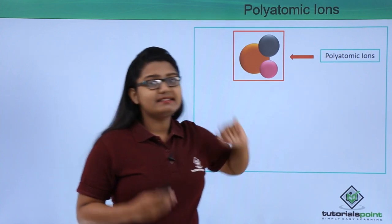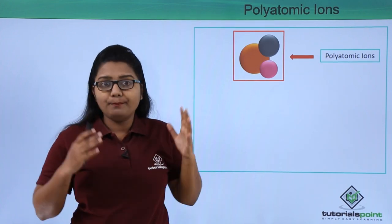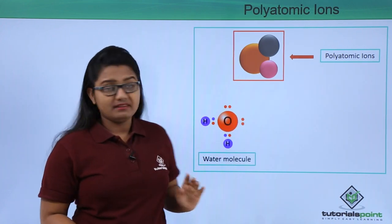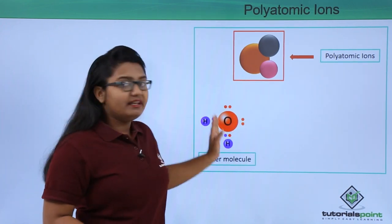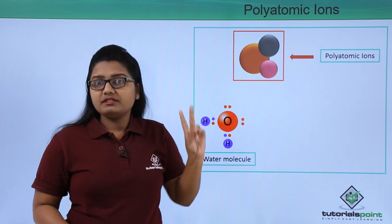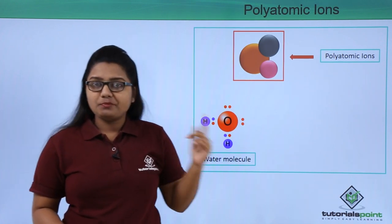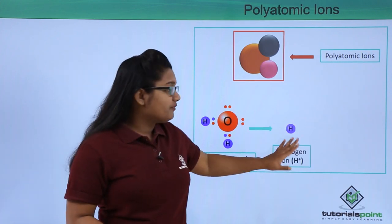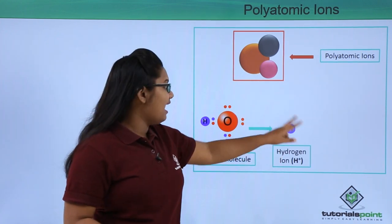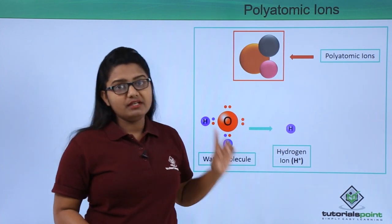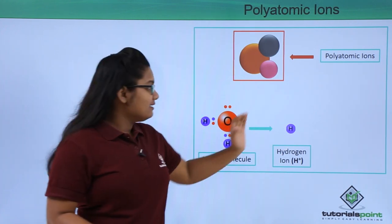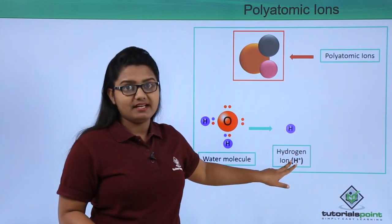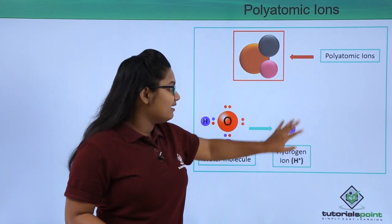Let us look at a water molecule. When it breaks down it forms two ions — one positive and one negative. The positive ion it forms is a hydrogen ion, which is made up of only one atom of hydrogen.